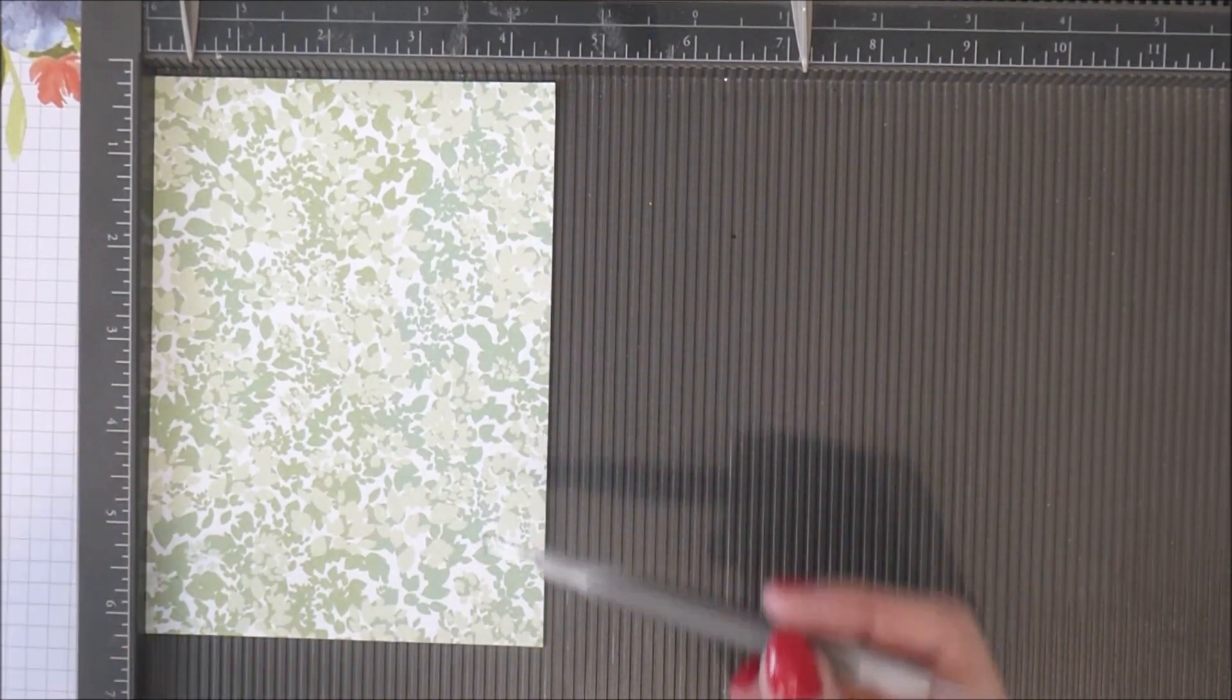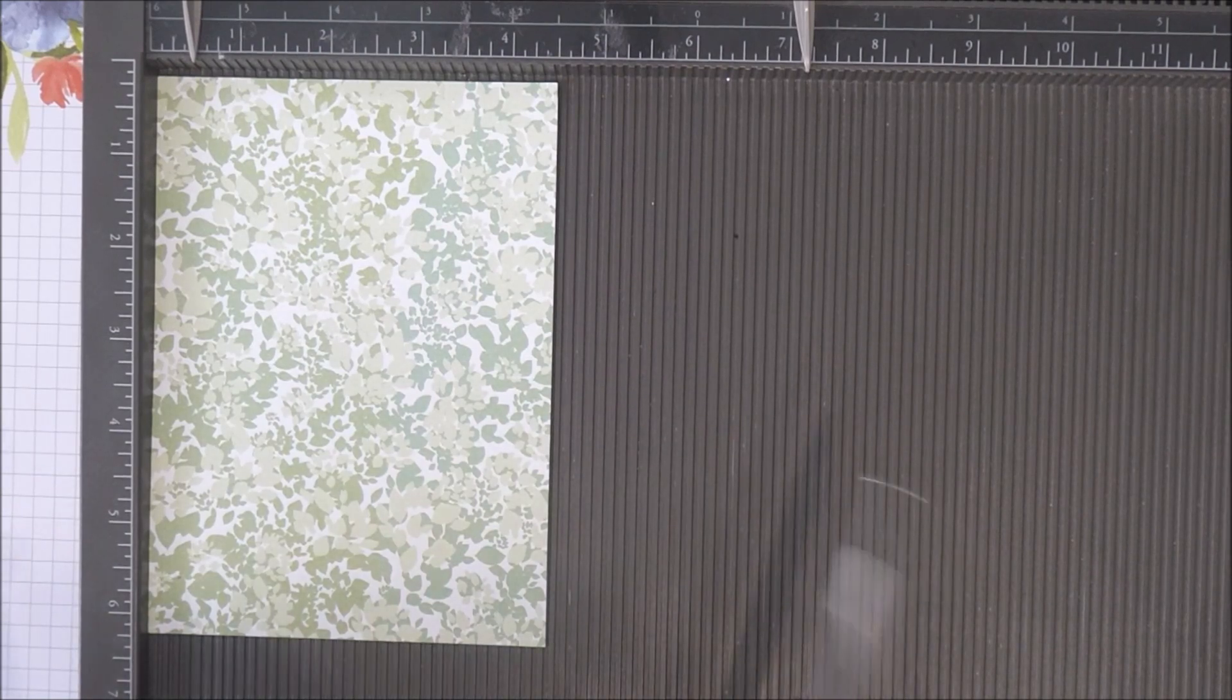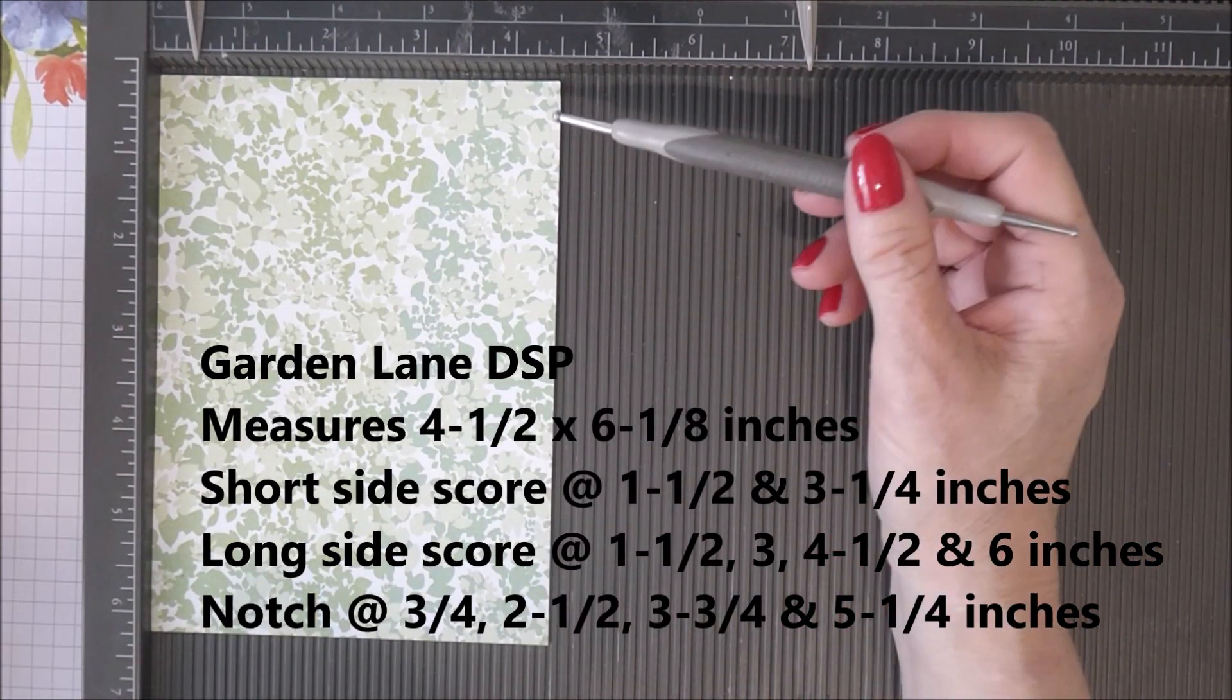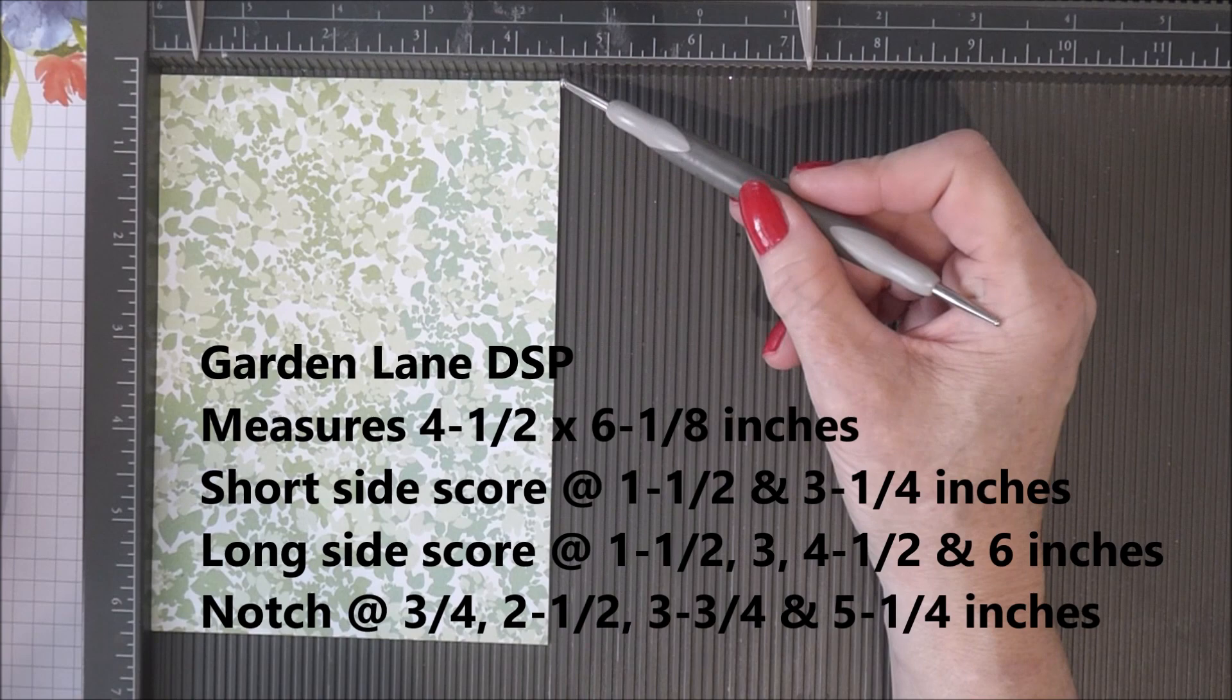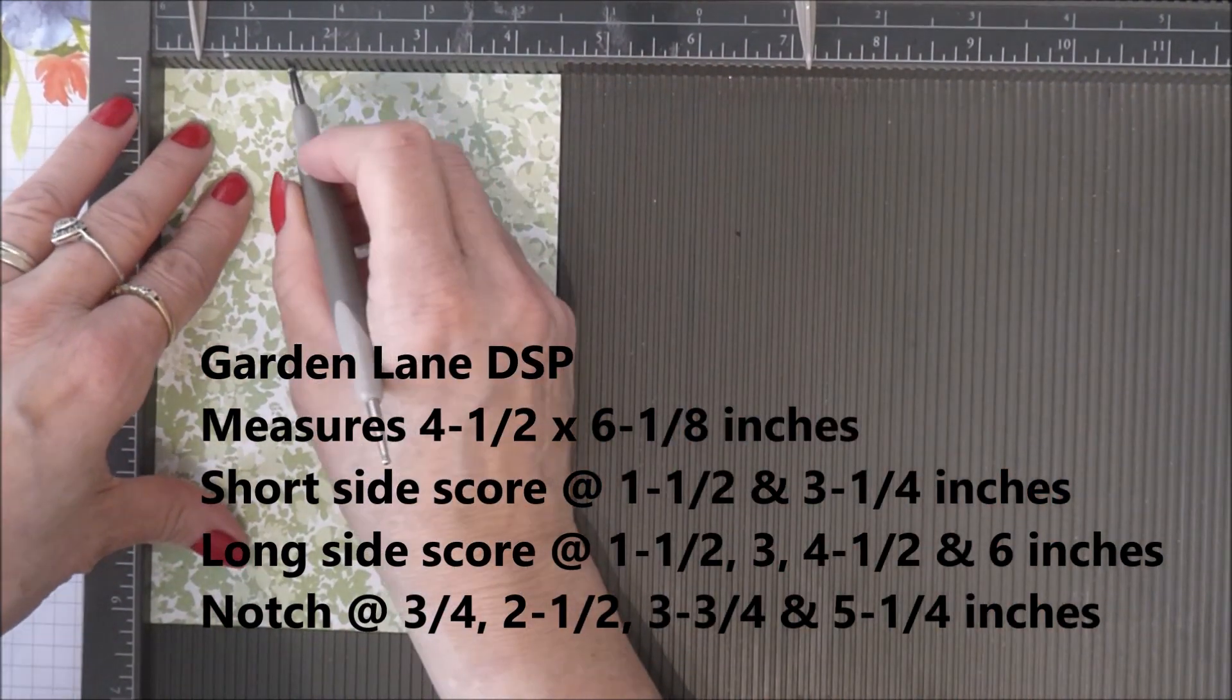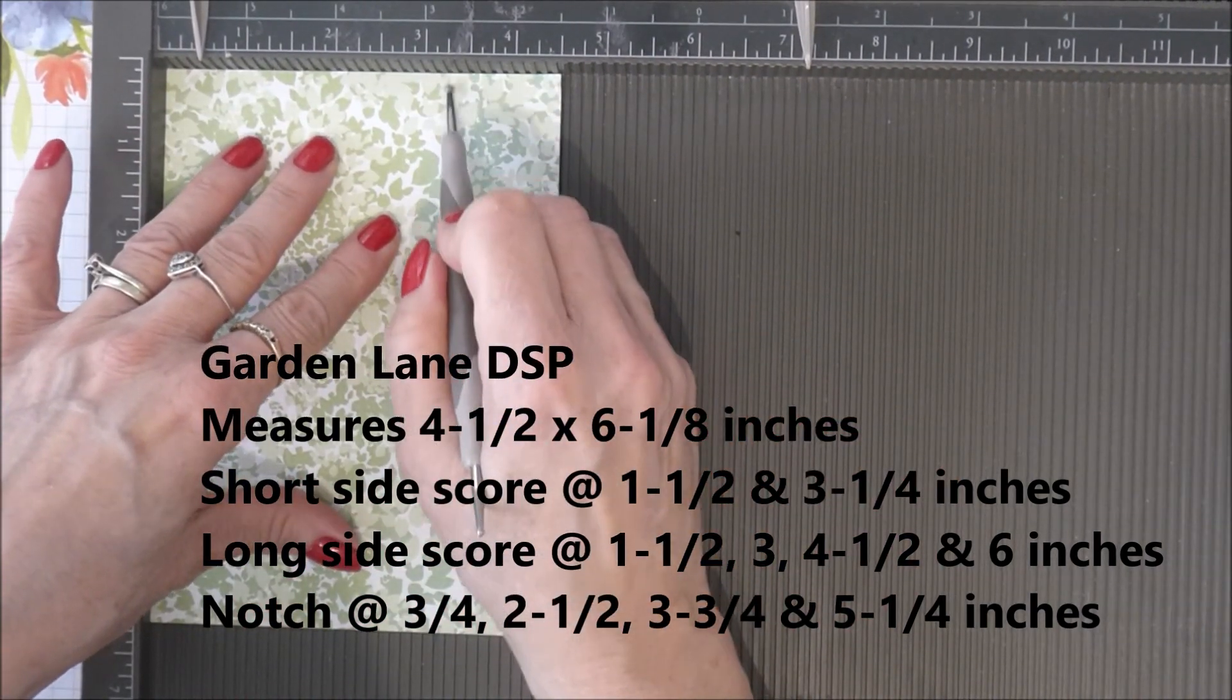Today I'm working with paper from the designer series pack which is called Garden Lane and I've cut my 12 by 12 piece down to four and a half inches by six and one eighth. We're going to start off by scoring on the short side so you want to make your first score at one and a half inches and then you're going to score at three and a quarter.